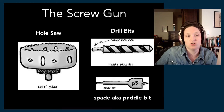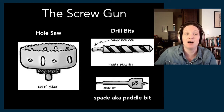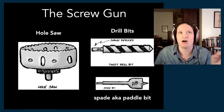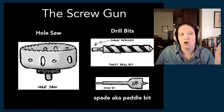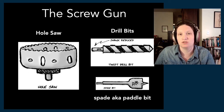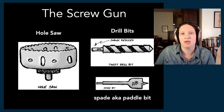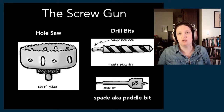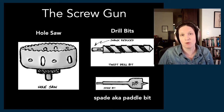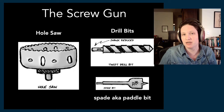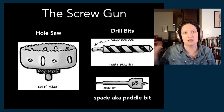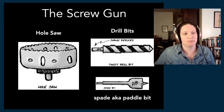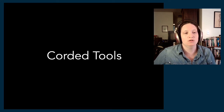Now let's talk about corded tools. Some of these come in a cordless version — you can buy kits at Home Depot where you put a battery pack on many of these — but in a theatrical setting we're working in a building, so we're just as happy to use a corded version, also because those are more powerful tools. They work better because they have electricity coming directly from the wall instead of what can fit in a battery.